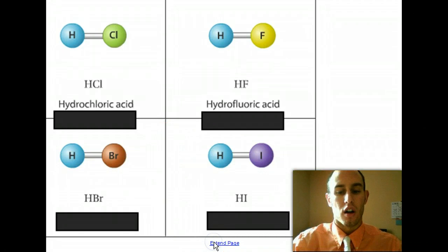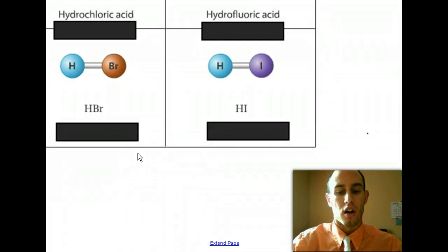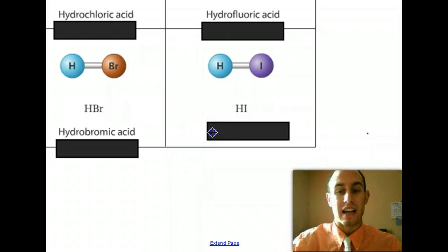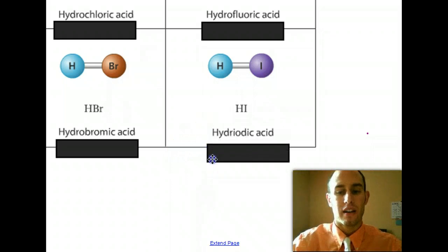Our other two examples here, HBr and HI. HBr will become hydrobromic acid, and HI is hydroiodic acid.